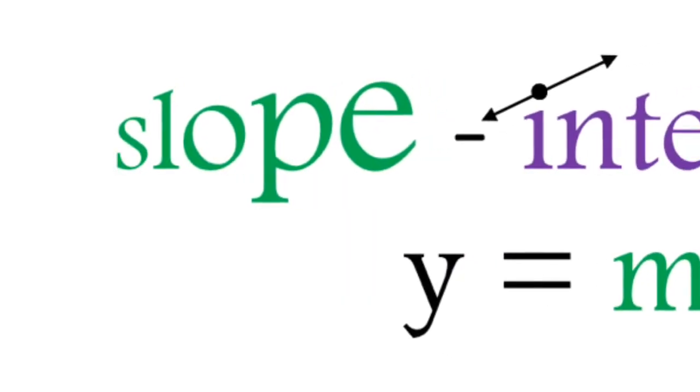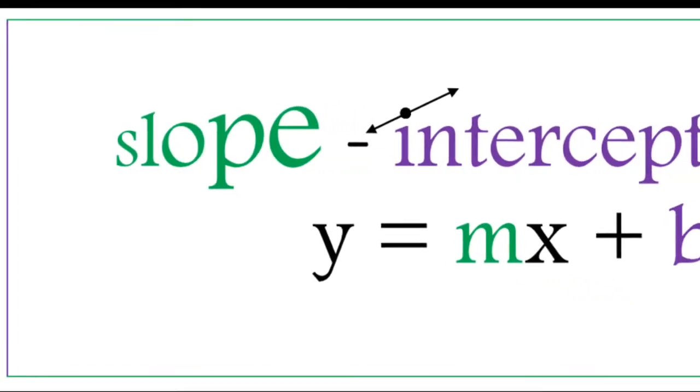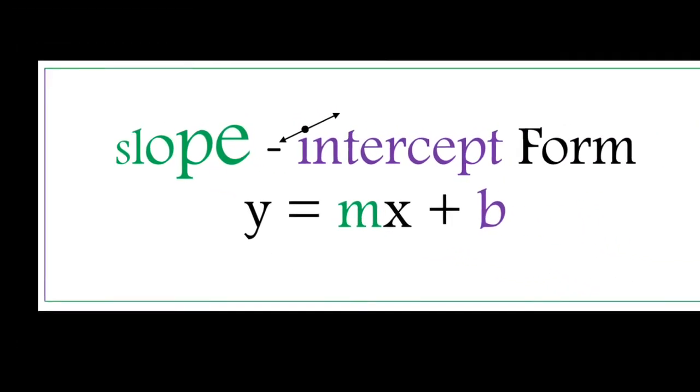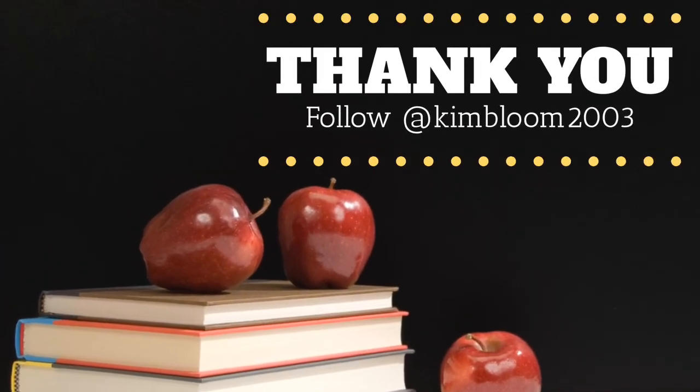Remember that slope-intercept form is y equals mx plus b, where proportional situations are zero, zero, and non-proportional have a y-intercept. Thank you. Don't forget to follow.